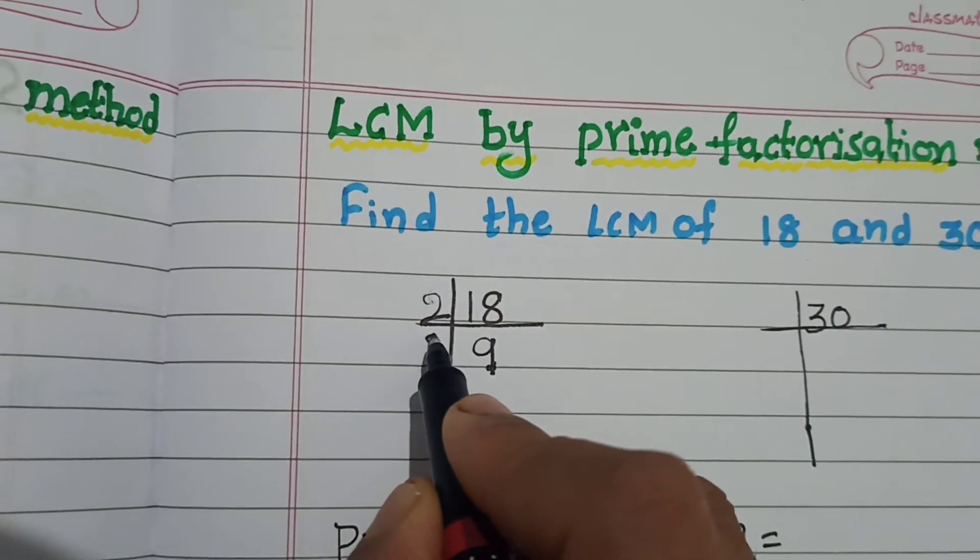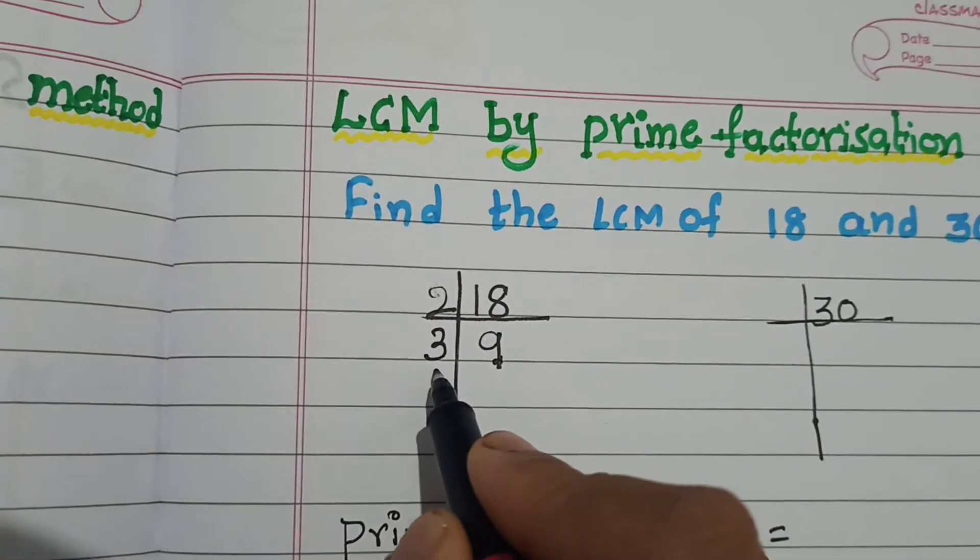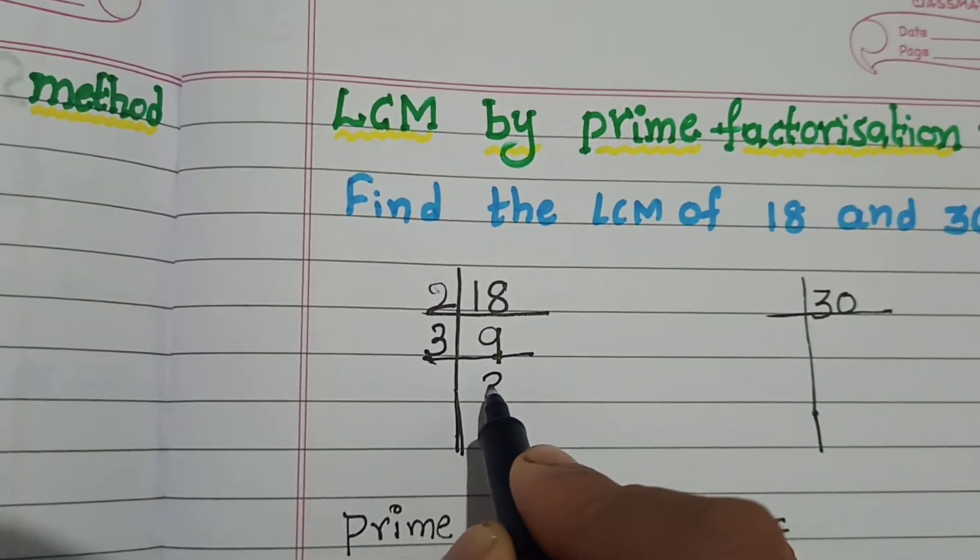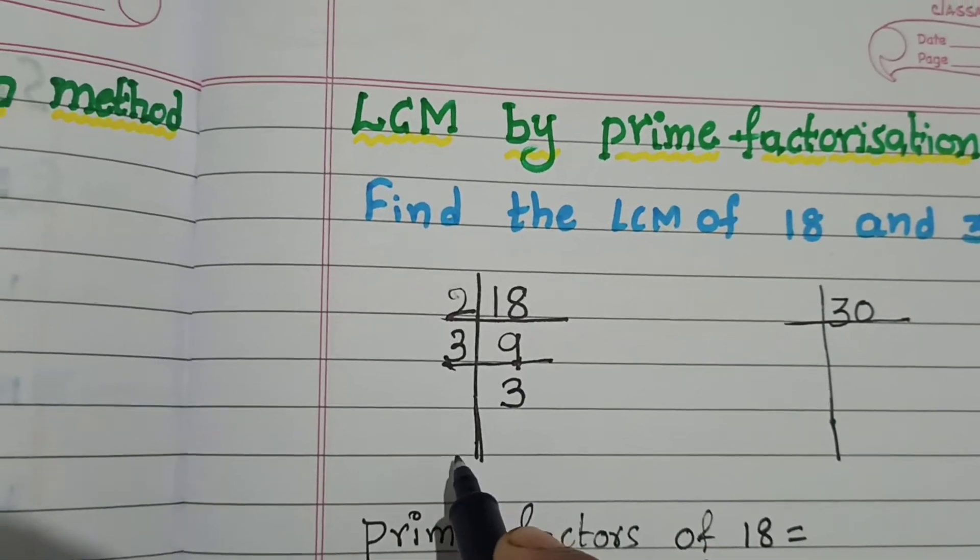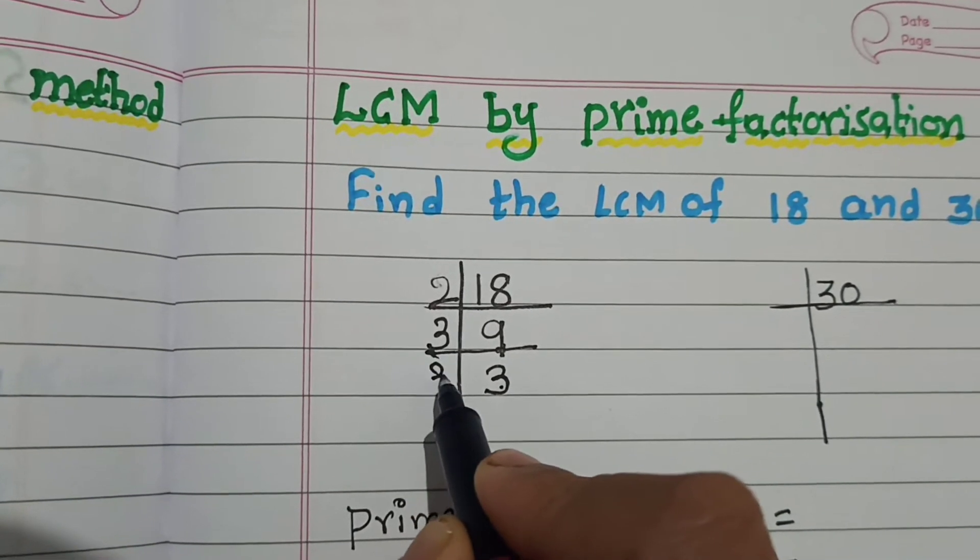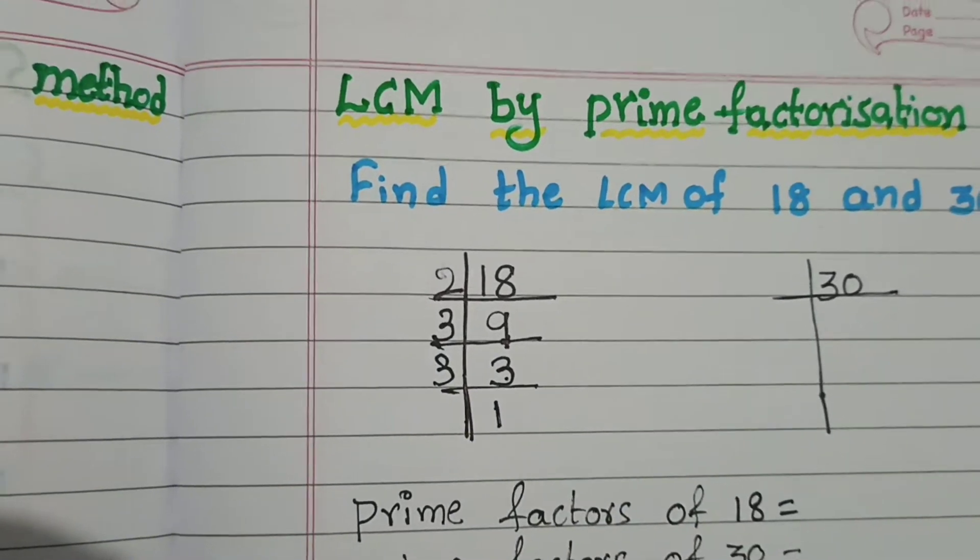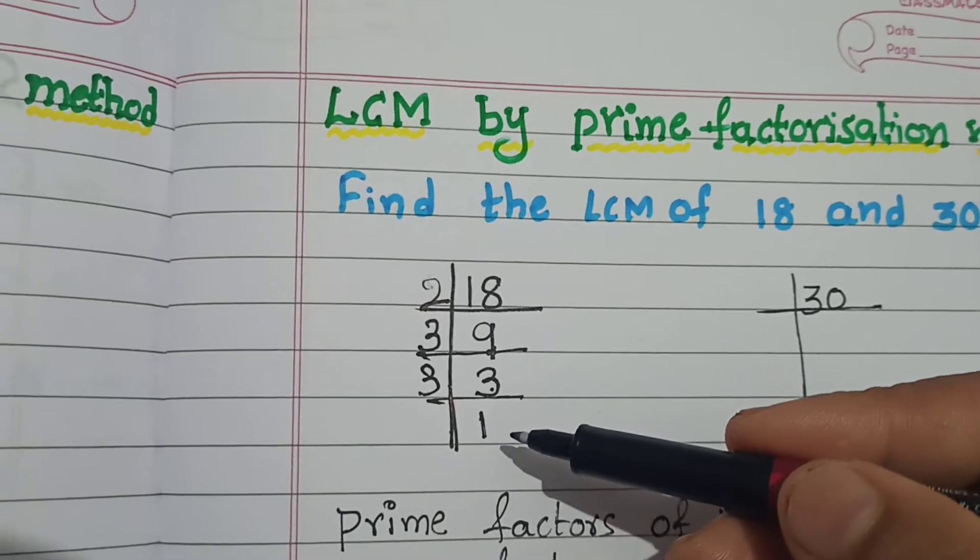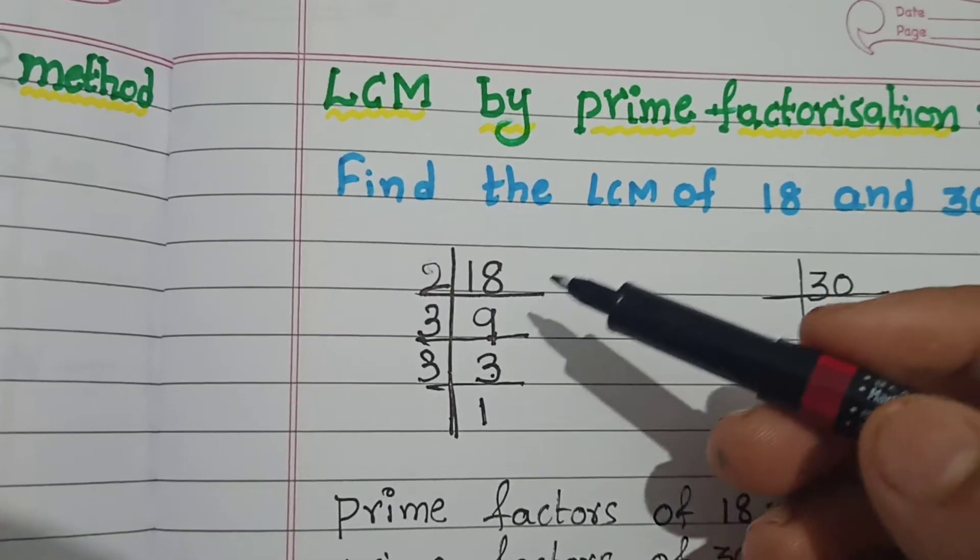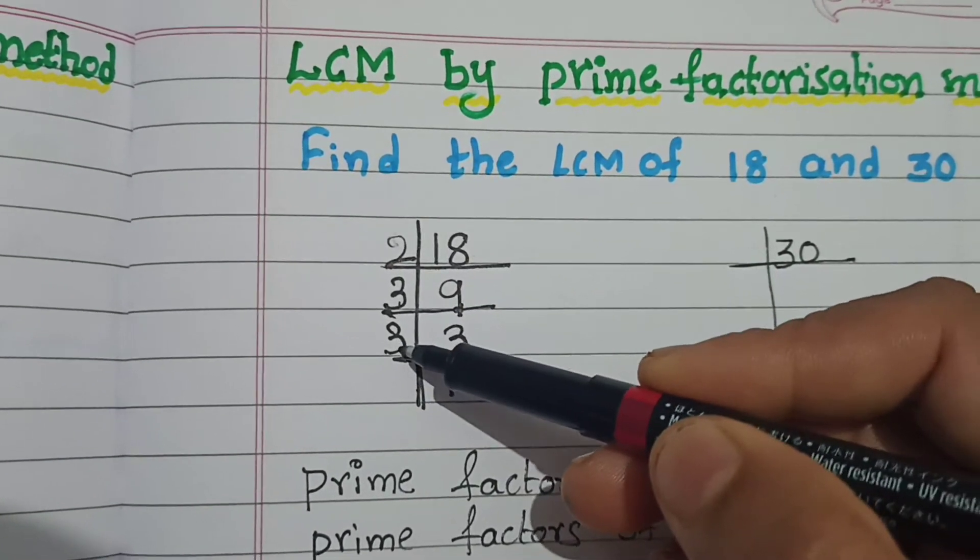Next prime number is 3. Go for next prime number. Now divide 9 by 3. 3 threes are 9. Next divide 3 by 3. 3 ones are 3. Continue this process to get 1 as a quotient. The prime factors of 18 are 2, 3 and 3.